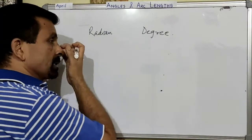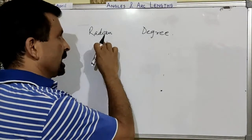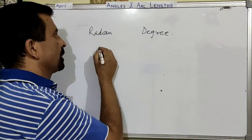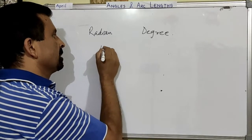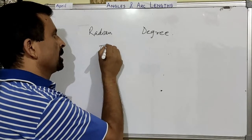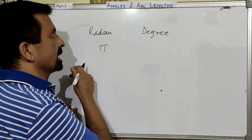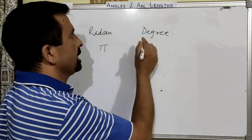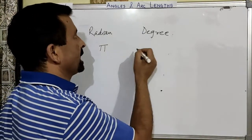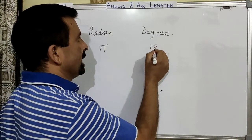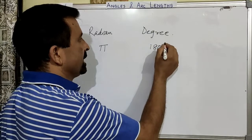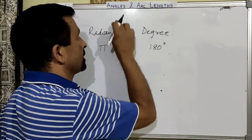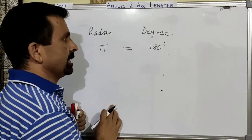First of all, we need to know the relation between the radian and the degree. One radian means we call it as pi — pi radian. And pi radian is equal to 180 degrees. This is the relation between the radian and the degree.